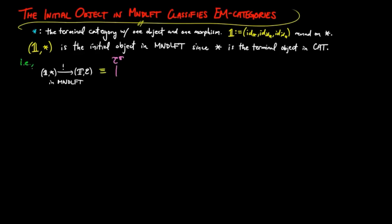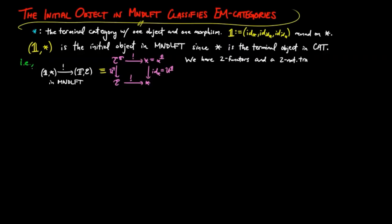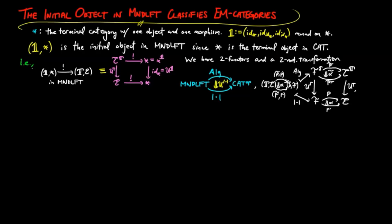Noting that the Eilenberg-Moore category for 1 is still just the terminal category, with the forgetful functor being the identity functor. We have been using the forgetful 2-functor defined by projecting to the second component for the objects, morphisms, and natural transformations of monad lifts. In this section, we also look at the first projection, which we denote by ALGE for algebra, which is also a 2-functor from monad lifts to the 1-opposite metacategory of categories. The forgetful 1-functors for the Eilenberg-Moore categories can be seen as a 2-natural transformation from ALGE to the forgetful functor, as demonstrated by the following diagram.